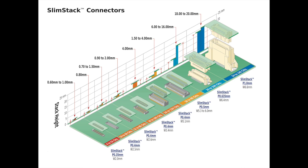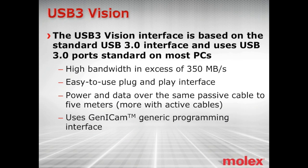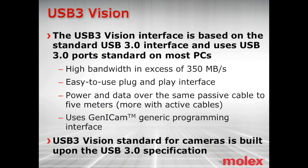So MIPI CSI-3 via SlimStack for internal camera connections is covered. Now, what are our options for external interfaces? USB 3 Vision. The USB 3 Vision interface is based on the standard USB 3.0 interface and uses USB 3.0 ports standard on most PCs. These connectors offer high bandwidth in excess of 350 megabytes per second, an easy-to-use plug-and-play interface, power and data over the same passive cable up to 5 meters — more with active cables — and use the GenICam generic programming interface.